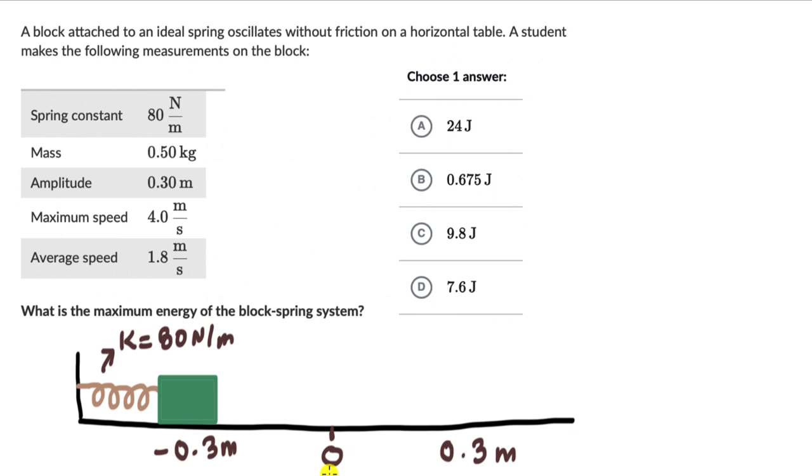Now we need to figure out the maximum energy of this block spring system. So first let's try to think about what all forms of energy are even present. Now the block is moving, there is some velocity, so there must be some kinetic energy and we also see a spring in the system so there must also be an elastic potential energy.